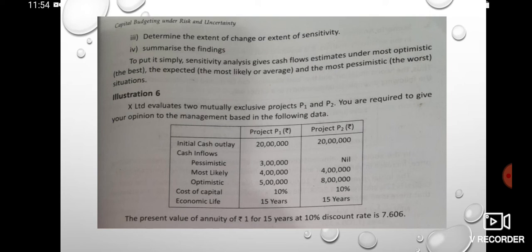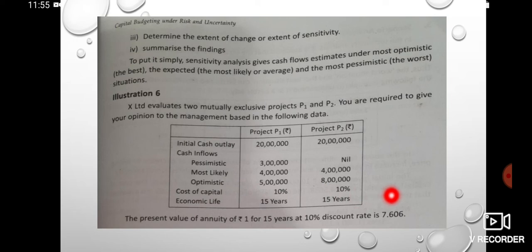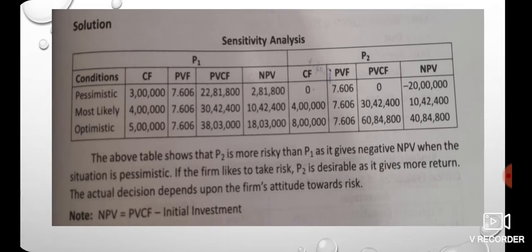This is a simple problem. To evaluate two mutually exclusive projects, P1 and P2, you are required to give your opinion to the management based on the following data. The initial cash outflow is 20,000. Cash flows under pessimistic conditions, most likely conditions at 4,000, and optimistic conditions at 5,000 or 1,000. The cost of capital is 10% and economic life is 15 years. The present value of an annuity factor is 7.606. We have pessimistic and optimistic conditions. Cash flows are 3,000, 4,000, or 5,000, and we multiply by the present value factor of 7.606.